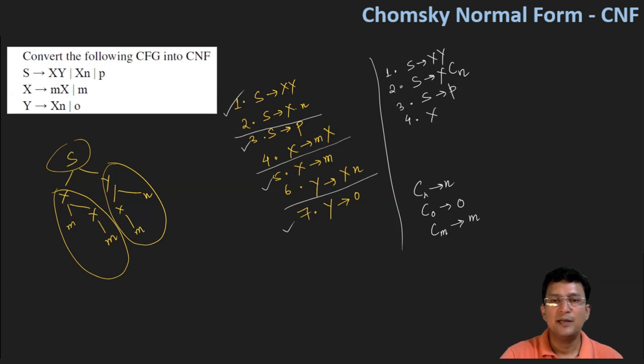Production 4: X produces small m and capital X, let's write it as Cm followed by X. Production 5: X produces m, already in Chomsky normal form. Production 6: Y produces X and Cn. Production 7 is already in Chomsky normal form.